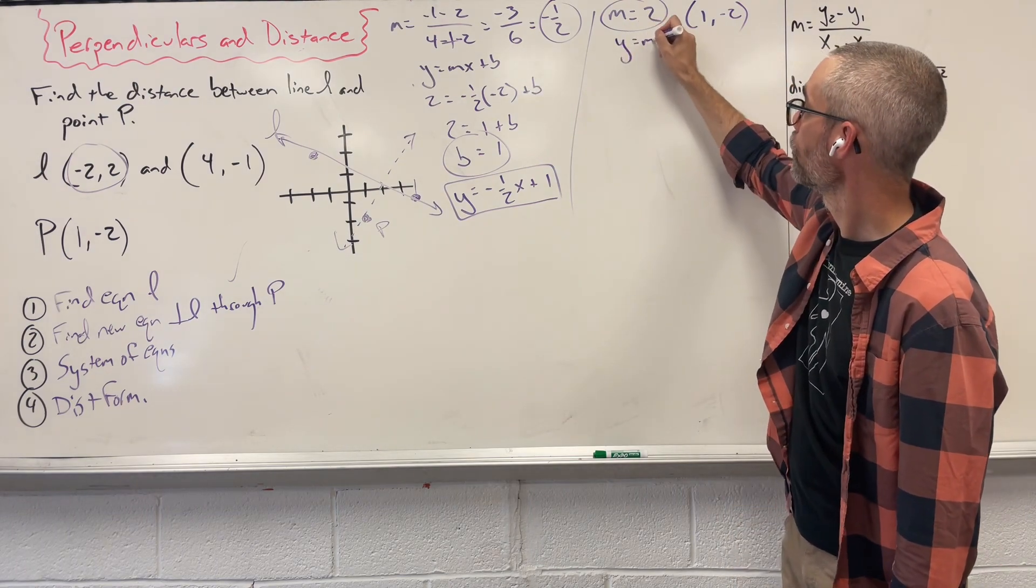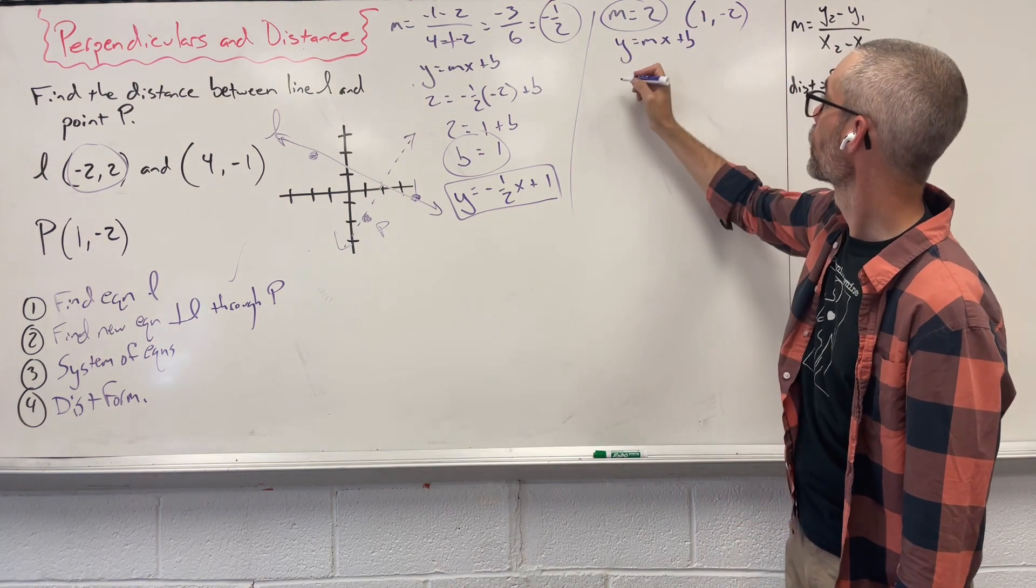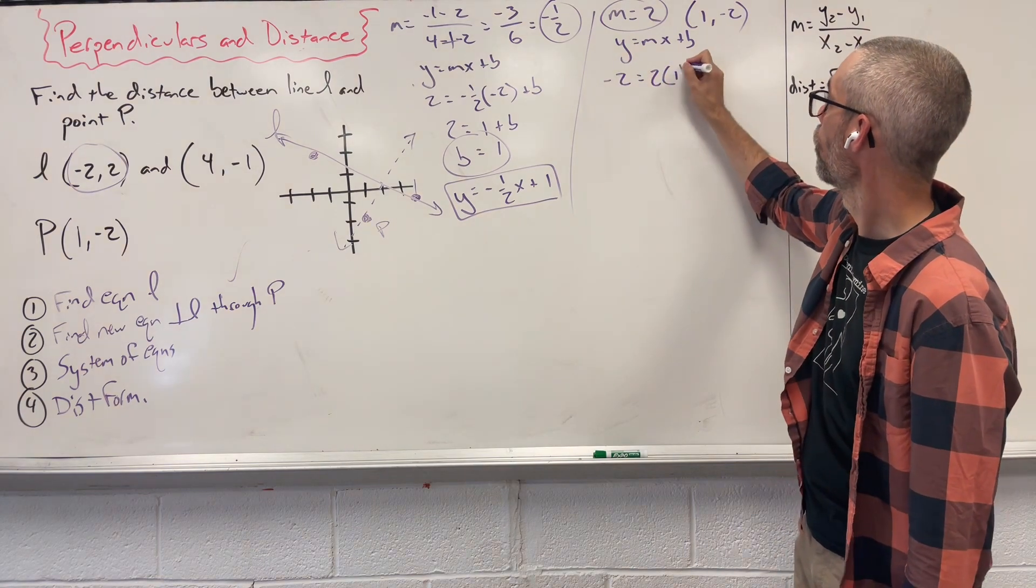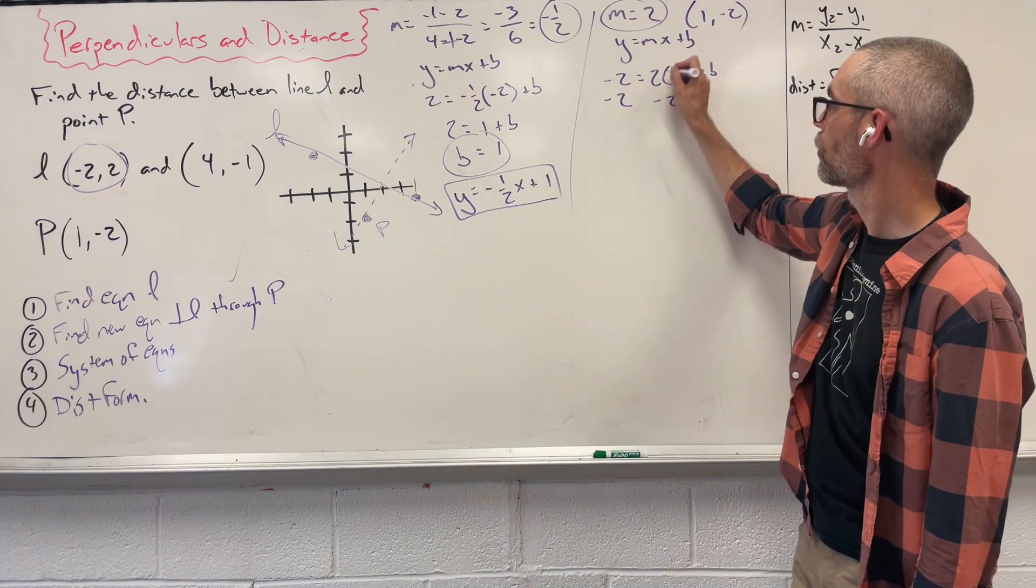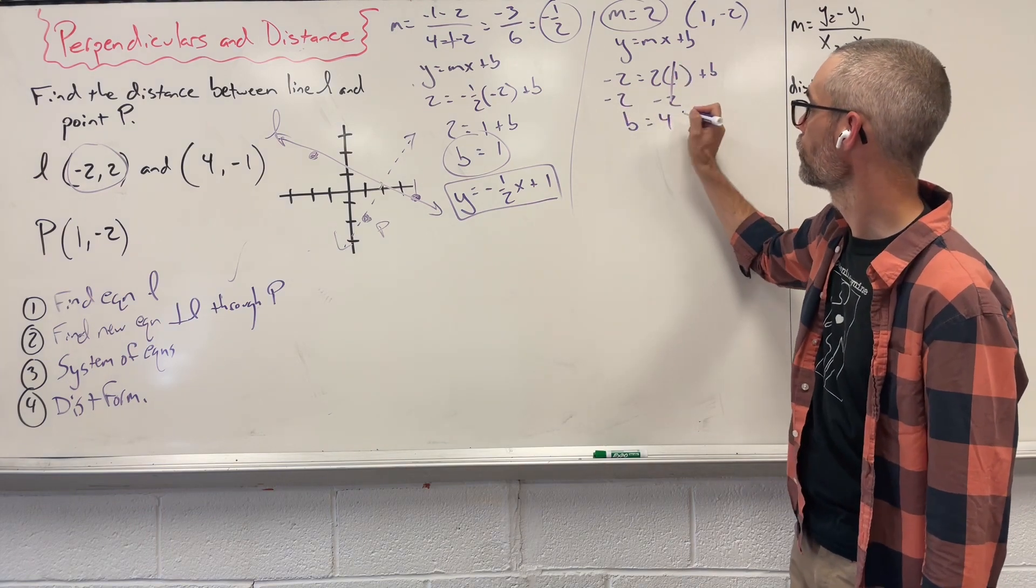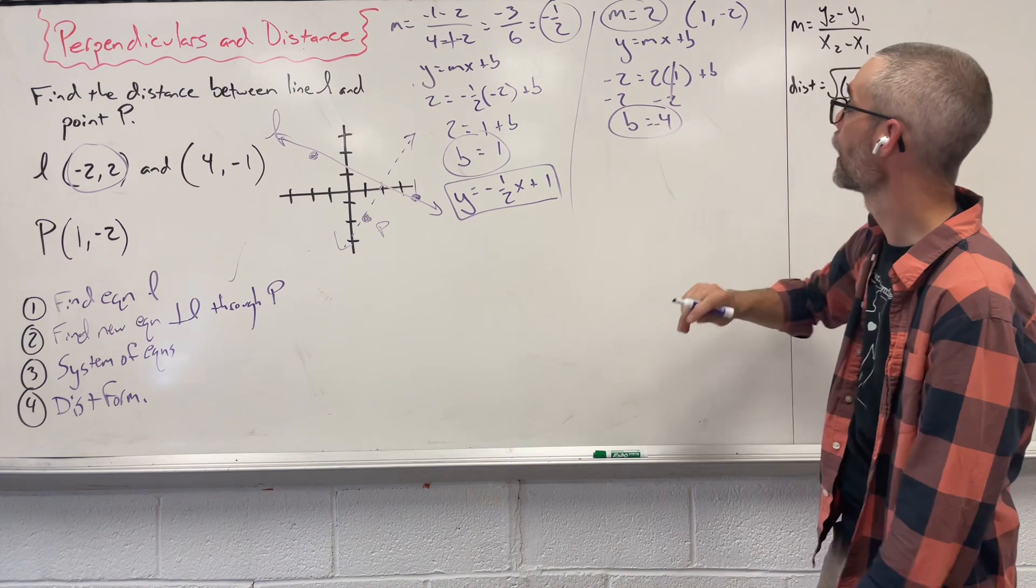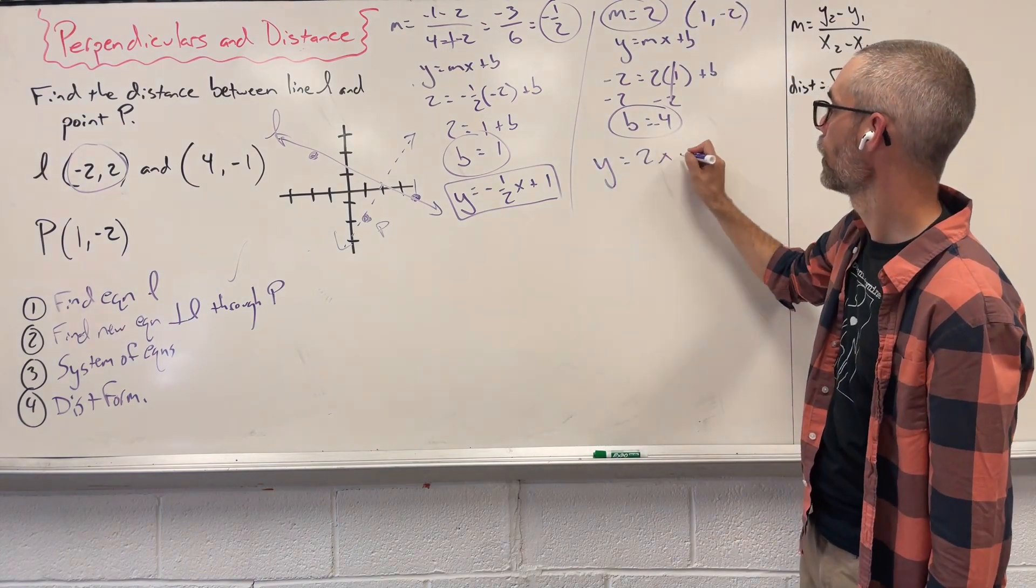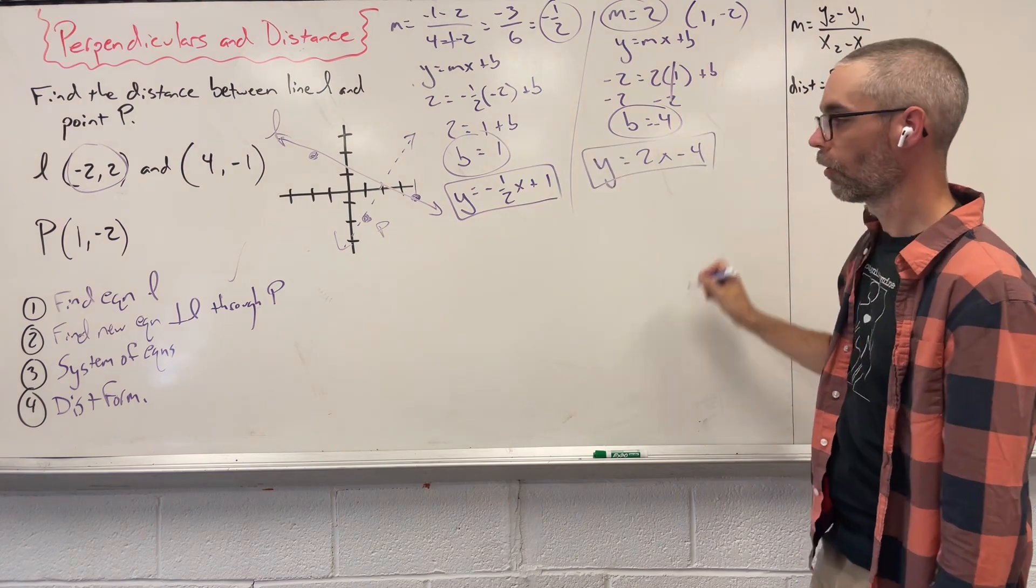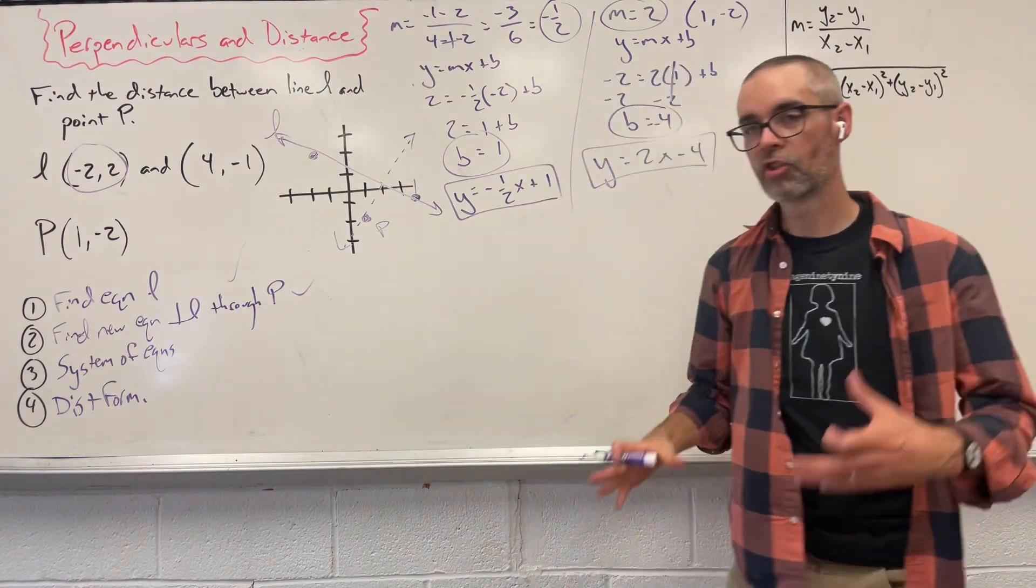Let's take this and do the same thing we just did here. So, we have Y equals MX plus B. We're going to say negative 2 equals 2 times 1 plus B. That's a 2. Let's subtract 2, subtract 2. B equals negative 4. We got that. Let's create an equation. Y equals 2X minus 4. Step 2, done.